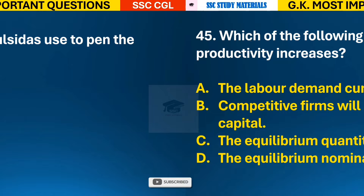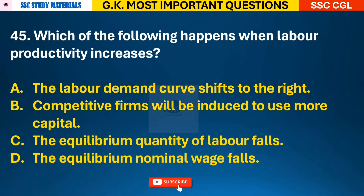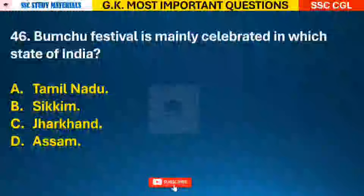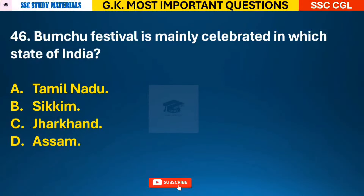Question 45: Which of the following happens when labour productivity increases? Answer A - the labour demand curve shifts to the right. Question 46: BAMCHU festival is mainly celebrated in which state of India? Answer B - it is celebrated in Sikkim.